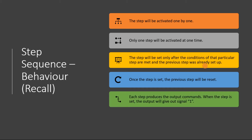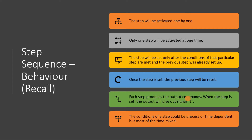Once a step is set, the previous step will be reset. Each step produces outputs, and when the step is set, the output will give out signal one. The output commands depend on the reset and set status of that output within that particular step. The conditions of a step could be process or time dependent — using a timer for example — or it can be both.